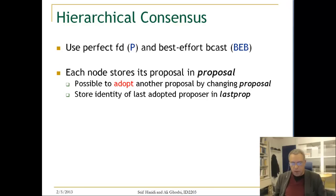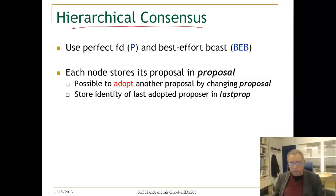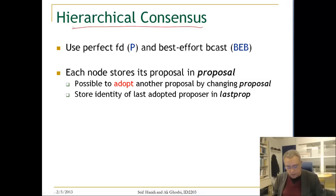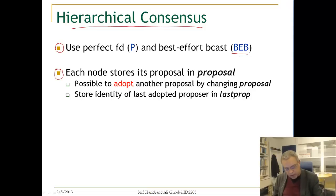This consensus algorithm is called hierarchical consensus. The reason is that we are going to give ranks to the different nodes and choose the value decided by the first correct process in this ranking or ordering. We are going to use a perfect failure detector and a best-effort broadcast. Here is what the algorithm does in a nutshell.